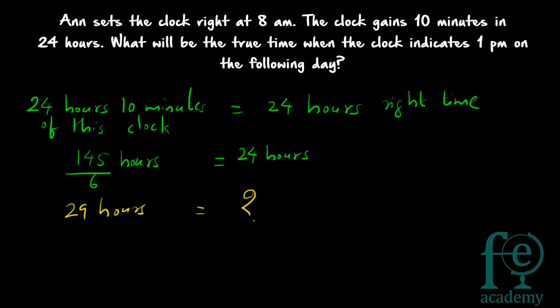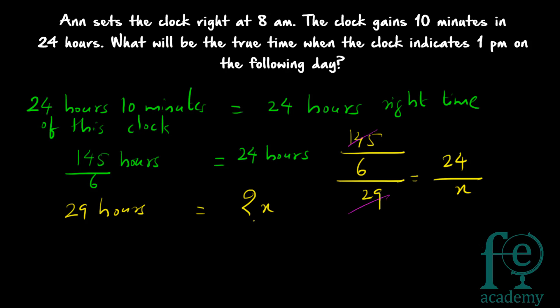So now you have got an equation. You are just forming the proportion: 145 by 6 divided by 29 is equal to 24 divided by x. So let's call this x. Now, 29 into 5 is equal to 145, so here you will be getting 5. So x will be equal to 24 into 6 divided by 5, which gives you 28 and 4 by 5 aways. So 4 by 5 aways means 4 by 5 into 60, which gives you 4 into 12 equal to 48. So finally, x is equal to 28 aways 48 minutes.